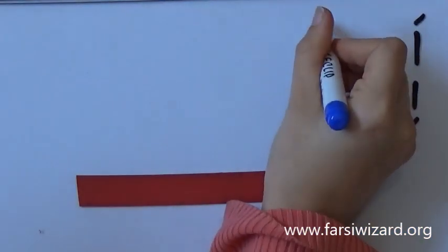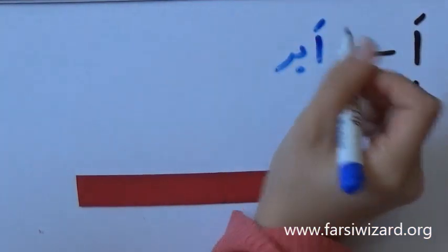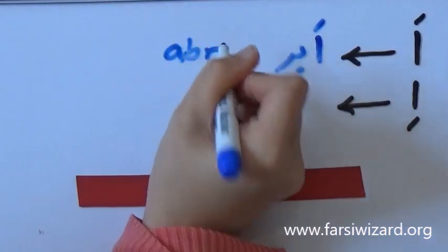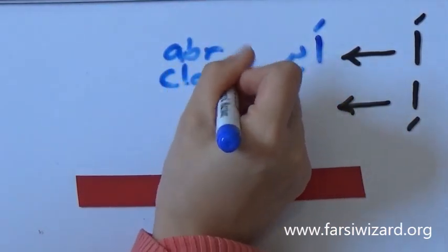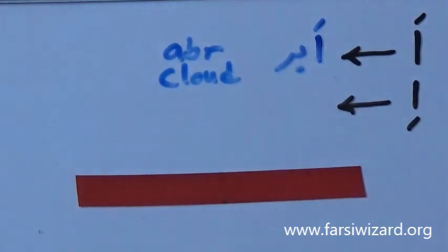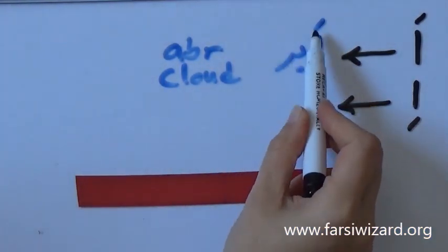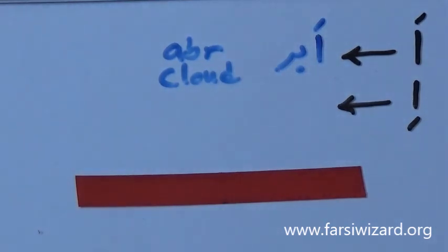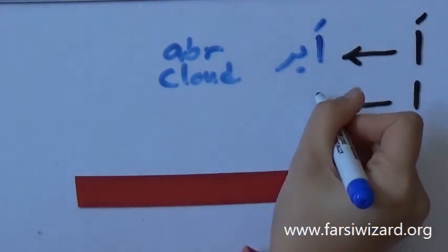For A, we have an example like ABR, which means cloud. Now, as you can see, ABR, the first letter, the first Aleph with the marker on top is pronounced as A. And remember that we are reading and writing from right to left.